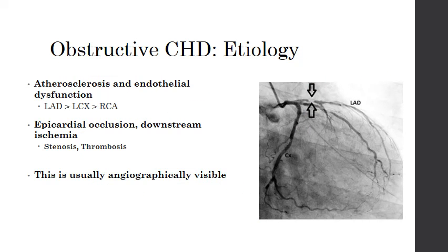Atherosclerosis and endothelial dysfunction are the main cause of coronary heart disease. Whether this is through a ruptured plaque causing in-situ thrombosis, downstream thromboembolism, or progressive luminal stenosis, this causes the majority of morbidity and mortality in CHD. Most of these lesions will be angiographically visible.